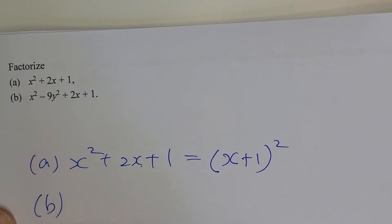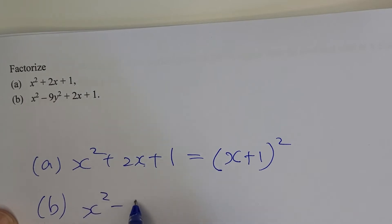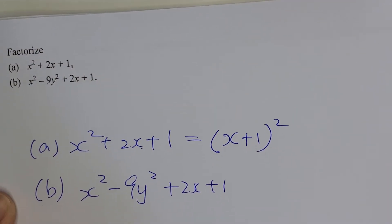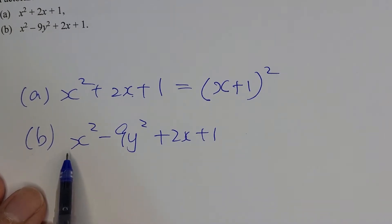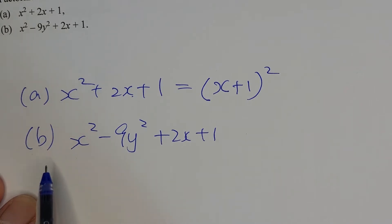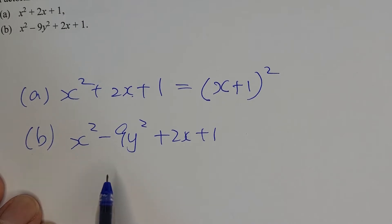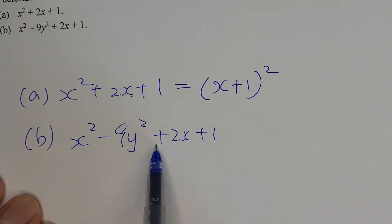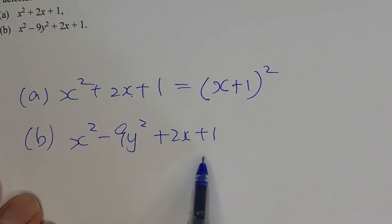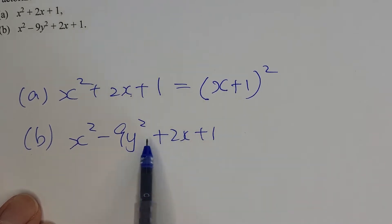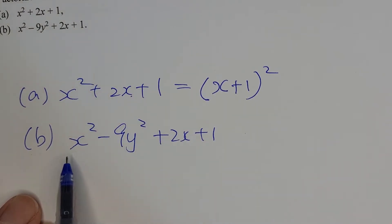Go to part b: x squared minus 9y squared plus 2x plus 1. Many of you may try to start with x squared minus 9y squared using the difference of two squares formula. You can do that, but after factorizing those terms you will find you cannot further factorize the remaining expressions. So starting with x squared minus 9y squared first is not the right approach.